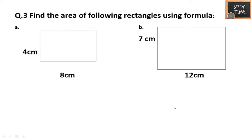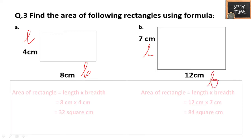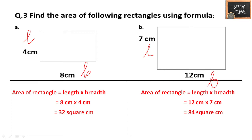Find the area of the following rectangles using the formula. The area of a rectangle is L into B. For the first one: 8 into 4 is 32 square meters. For the second: 12 into 7 centimeters is 84 centimeter square. You can write this as square centimeter or centimeter square.